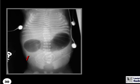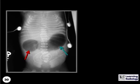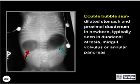What is the name of this sign? This is the double bubble sign, representing a dilated stomach and the proximal duodenum in a newborn, typically seen in duodenal atresia, mid-gut volvulus, or annular pancreas.